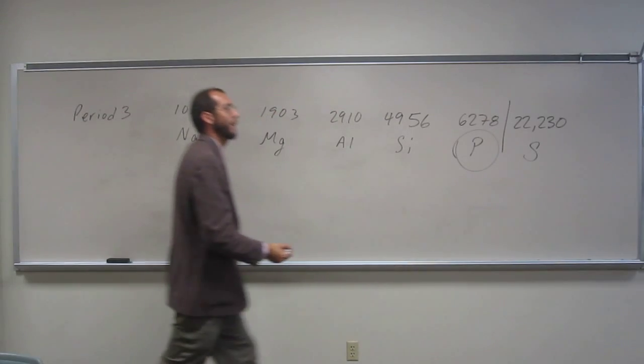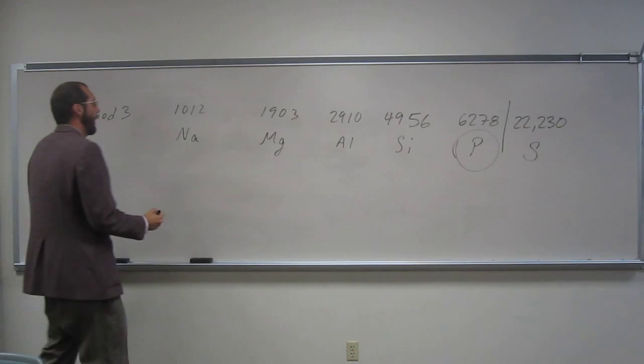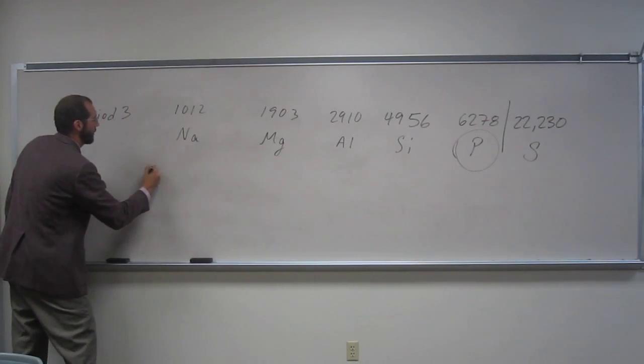And then it says write the electron configuration. Let's just do it, just since the question says that. Let's write the electron configuration for phosphorus. So what is it?